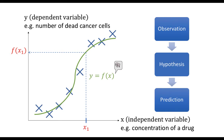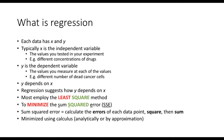we would be able to observe that f(x1) cancer cells would die. This is one of the predictions of this model. Obviously, you can pick whatever values on the x-axis and test for its y-value. Of course, the scientific method is not just about making hypotheses and predictions. We have to test whether these predictions are correct in order to demonstrate that the model is true. This is a brief summary of what regression is about.